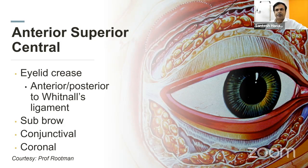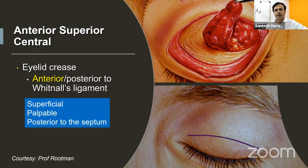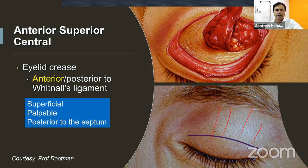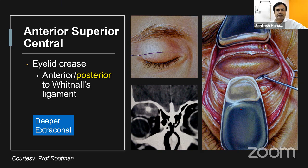For anterior superior central, the eyelid crease incision is used with an approach either anterior or posterior to the Whitnall's ligament. A sub-brow approach, conjunctival approach, and coronal approach are also options. With an eyelid crease incision anterior to the Whitnall's ligament, going in the sub-orbicularis plane bypasses the levator, so there is no incidence of postoperative ptosis. This is for lesions posterior to the septum.